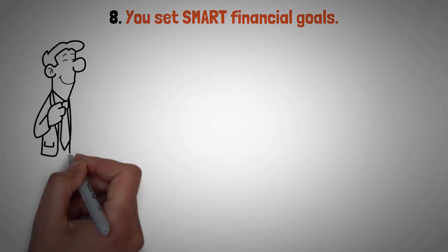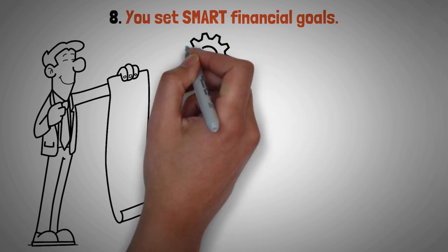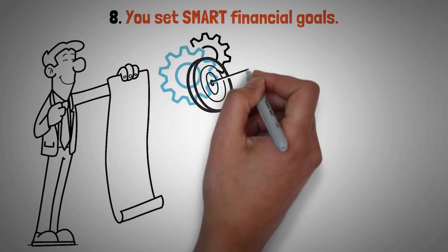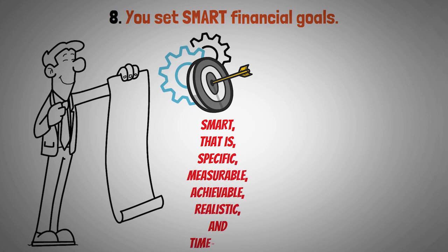Number eight: you set SMART financial goals. You are not a wisher, you are a planner. You have a clear and concrete plan to turn your vision into reality. You break down your vision into smaller and more manageable goals that are SMART: specific, measurable, achievable, realistic, and time-bound.